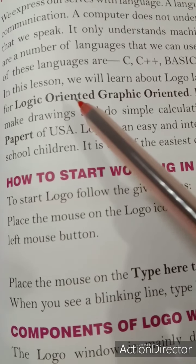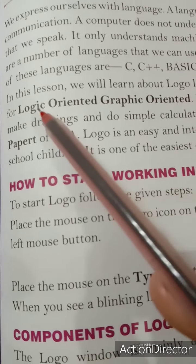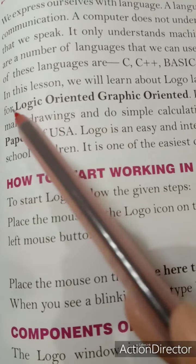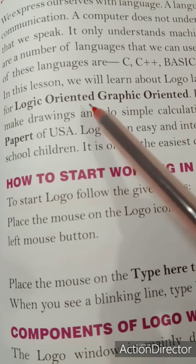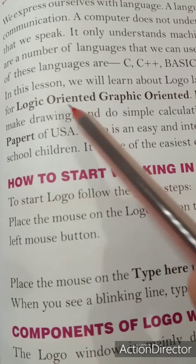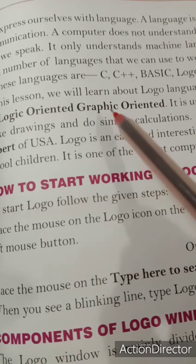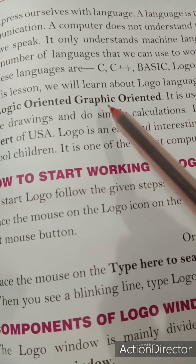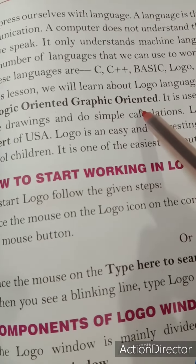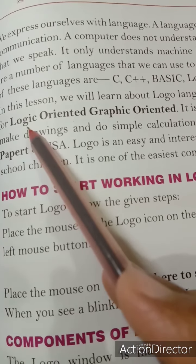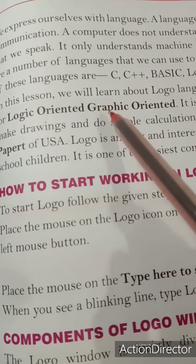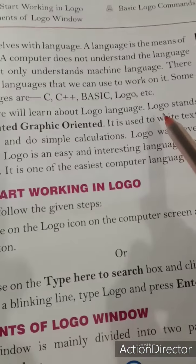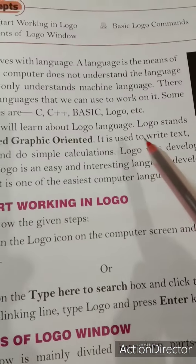So here, logic oriented means rule-based या rule-directed — rule के according या rule की दिशा में। Graphic oriented — graphic होता है visual, दिखाई देने वाला, मतलब visual oriented. जो logic के according होता है और visual के according होता है, ऐसी language है Logo।